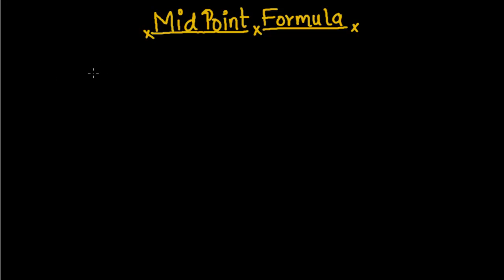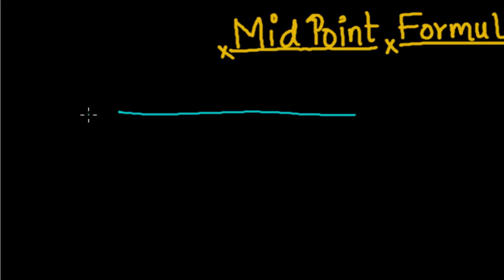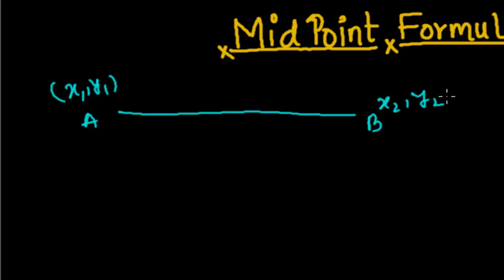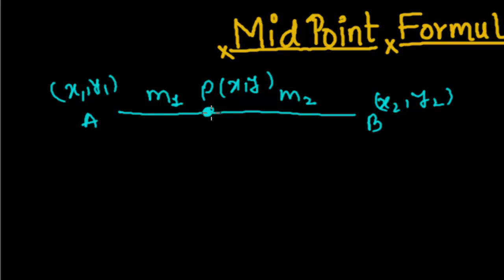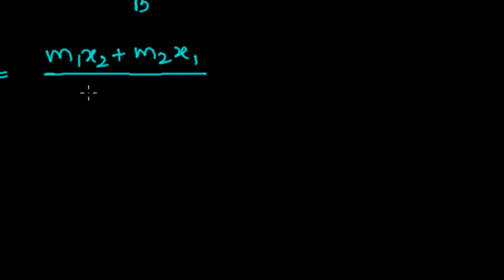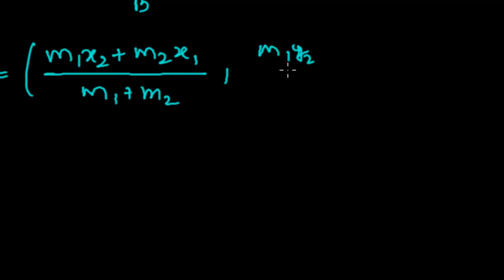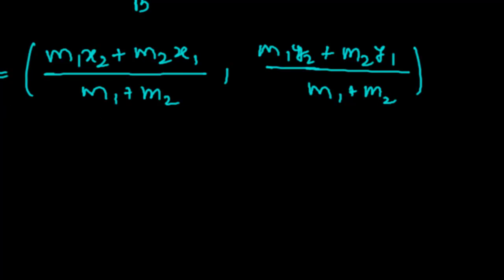Let me recap the section formula once again. Suppose this is a line with point A having coordinates x1, y1 and point B having coordinates x2, y2, and here is a point P somewhere whose coordinates are x and y — these are unknown while both endpoints are given. This point P is dividing the line in the ratio m1 : m2. The section formula gives us: x = (m1·x2 + m2·x1) / (m1 + m2), and y = (m1·y2 + m2·y1) / (m1 + m2). This is the section formula we recently learned.